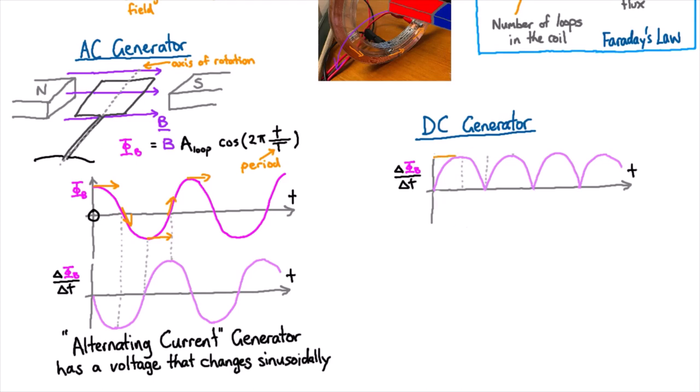And there you can see you've got a much flatter looking voltage, although it does have these dips here. And the way you can fix that is you can put in extra coils. So you might have back in your generator, you might have another coil that's at right angles.